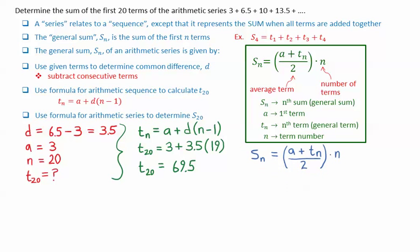We can then use the formula for an arithmetic series to calculate the 20th sum. S20 equals a plus Tn, that's 3 plus 69.5, divided by 2, times n, n being 20.